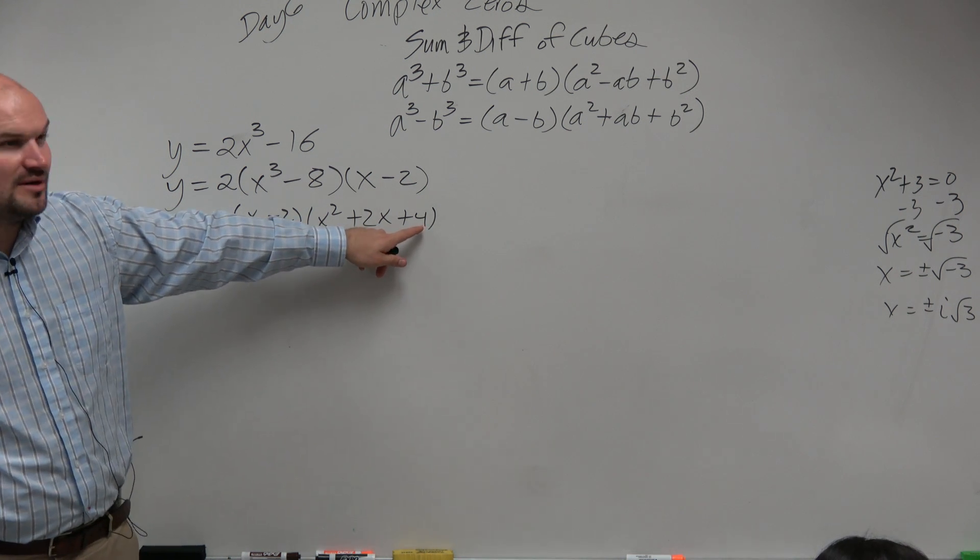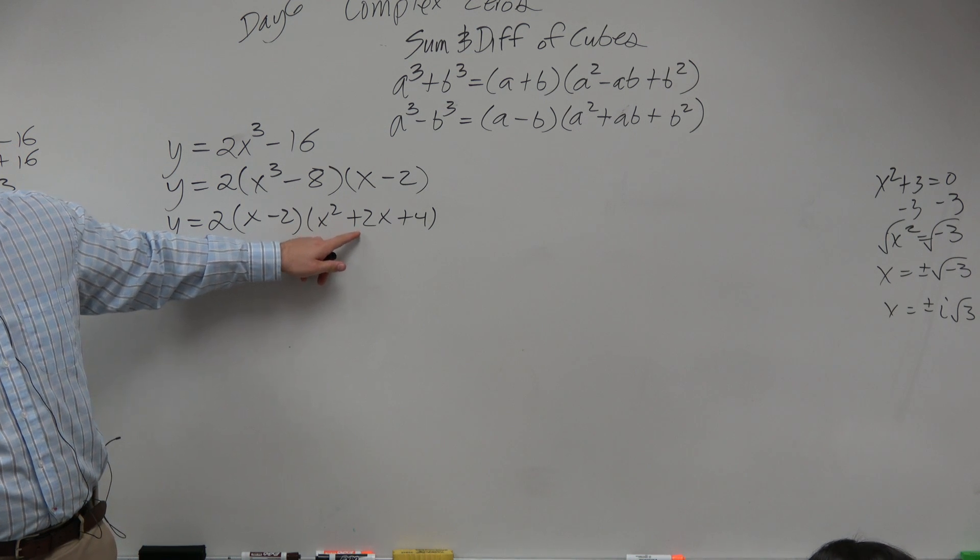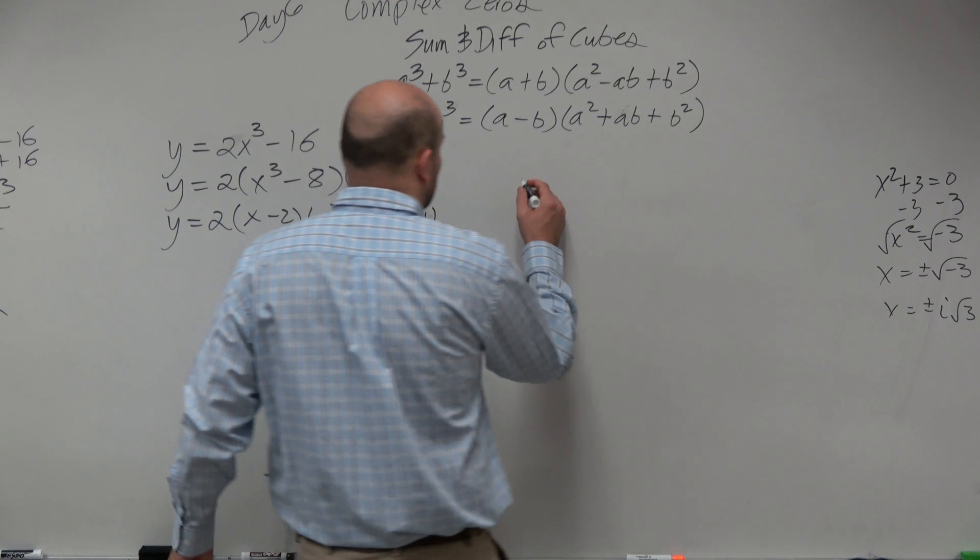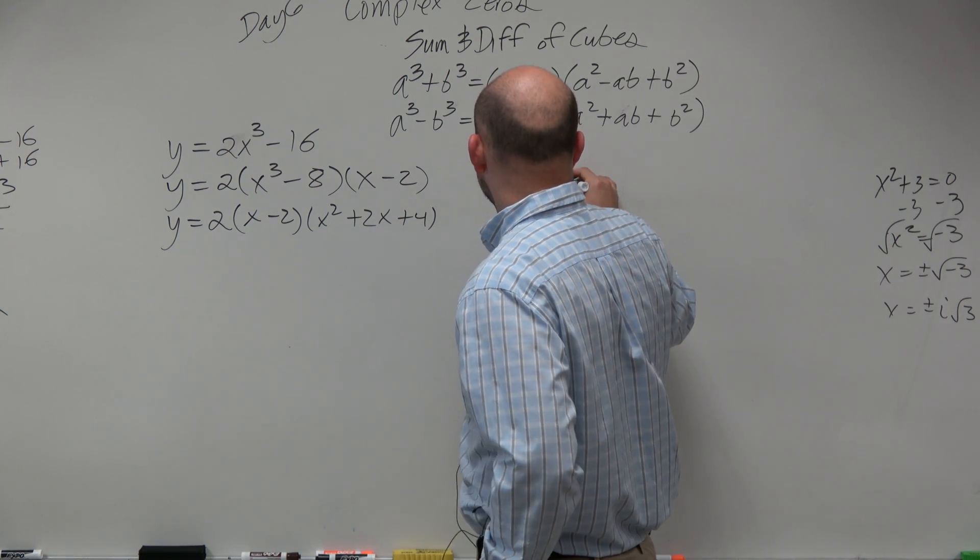So if we look at this, though, what two numbers multiply to give you 4 or add to give you 2? Not working out so well, is it? So we say, all right, well, looks like we need to go ahead and solve this with the quadratic formula.